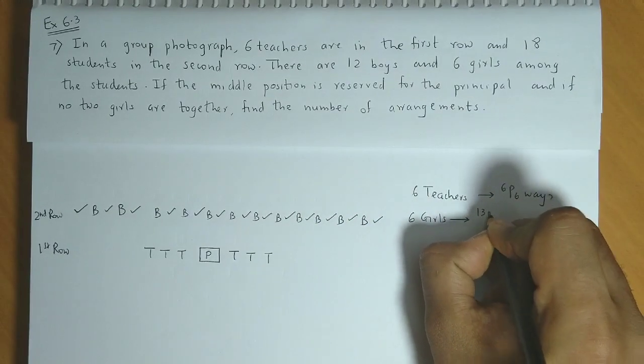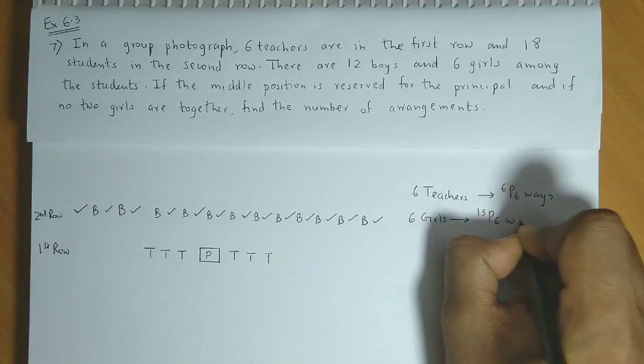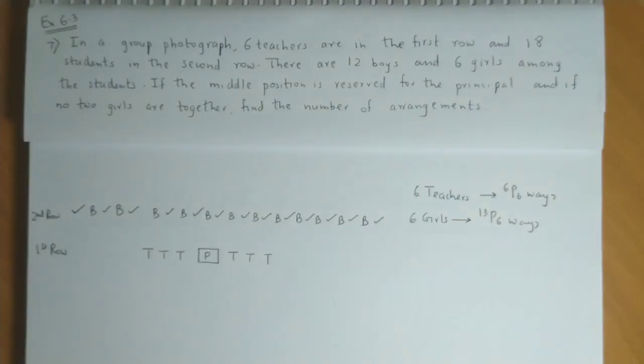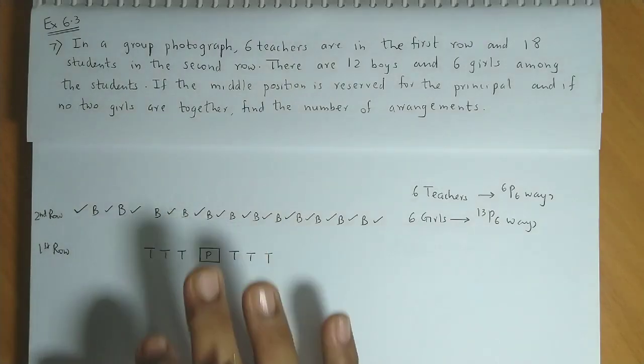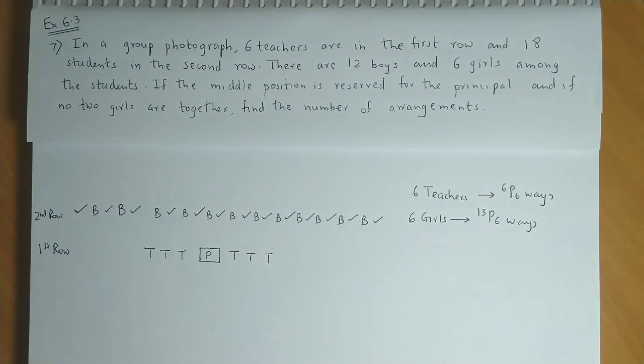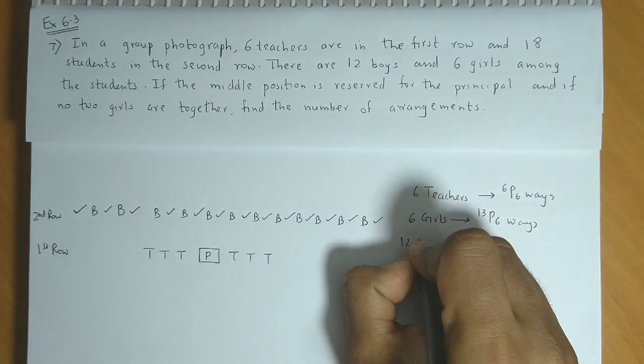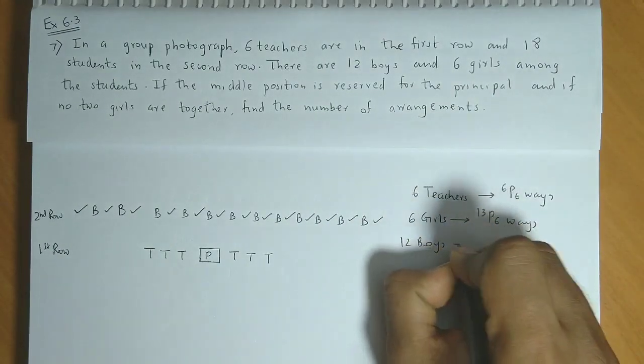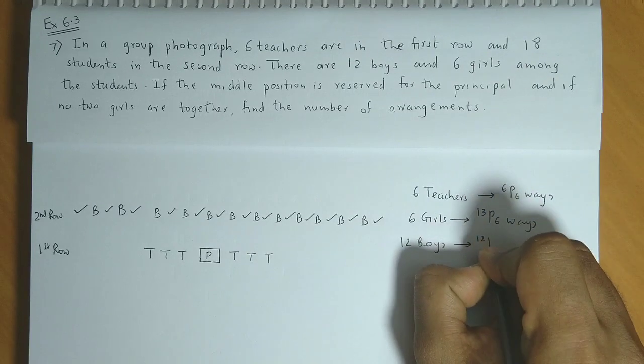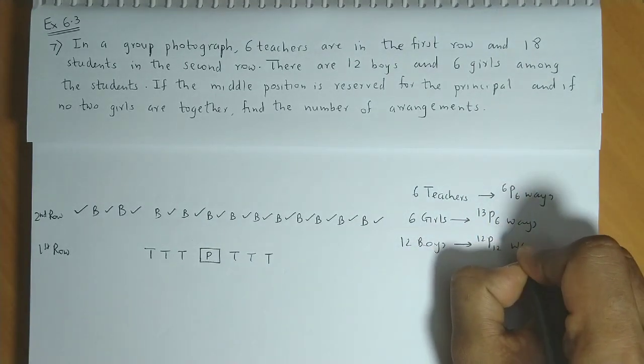So 6 girls could be arranged in 13P6 ways. Right? Now, if we count around, we have 12 seats. Who will sit there? Boys. So the 12 boys could be arranged in 12P12 ways.